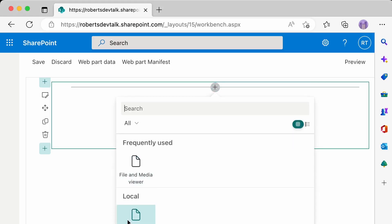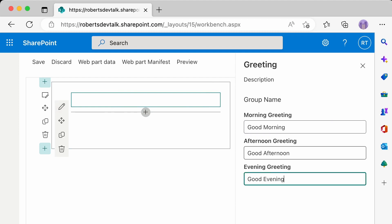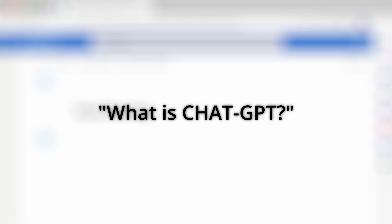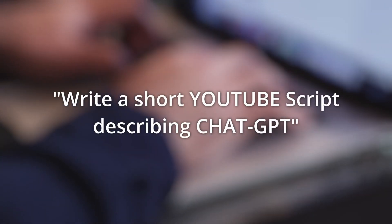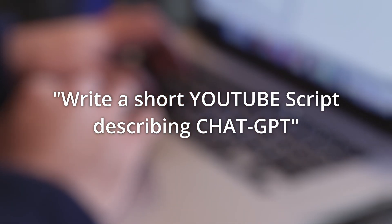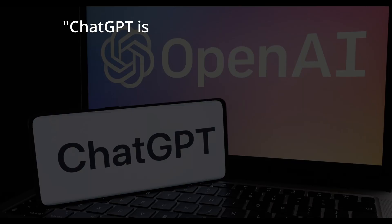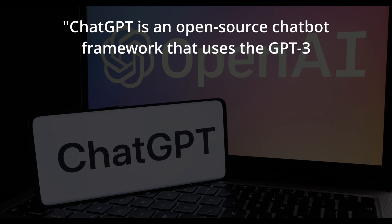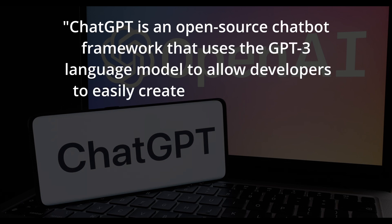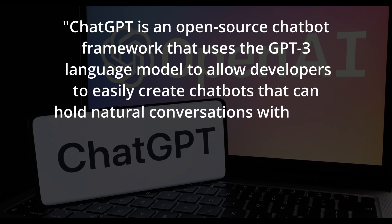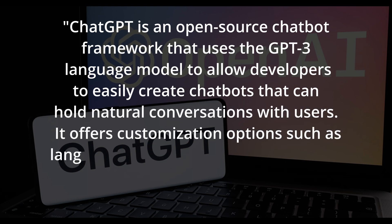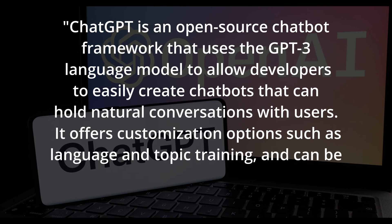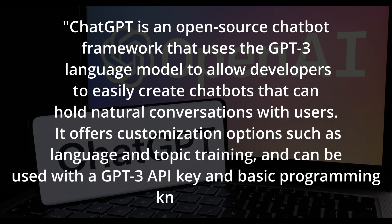Before we build our AI-generated monster of a web part, first we need to ask: what is ChatGPT? Well, I asked ChatGPT that. I wrote the question: 'Write a short YouTube script describing ChatGPT.' And it wrote: 'ChatGPT is an open source chatbot framework that uses the GPT-3 language model to allow developers to easily create chatbots that can hold natural conversations with users. It offers customization options such as language and topic training and can be used with a GPT-3 API key and basic programming knowledge.' Don't worry, we'll be getting to the web part in just a second.